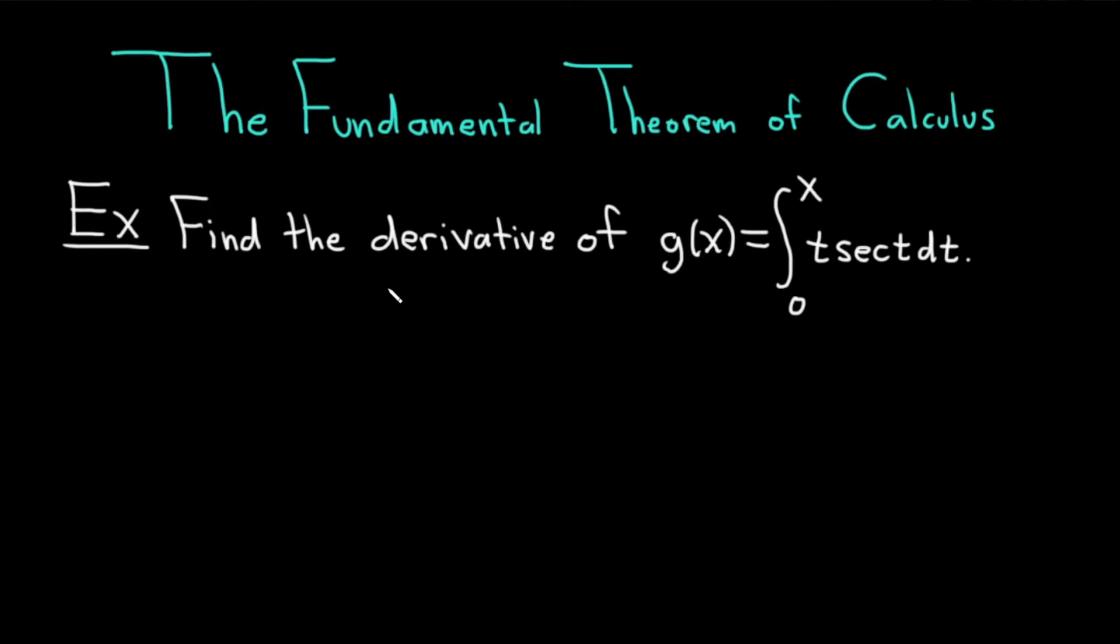Let's start with this example. Find the derivative of g(x) equals the definite integral from 0 to x of t times the secant of t dt.